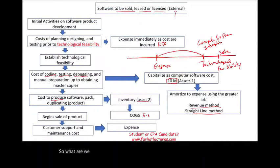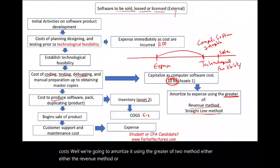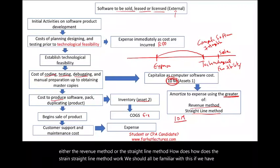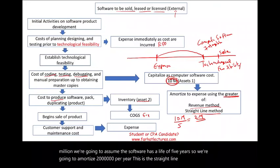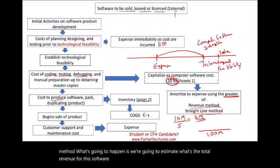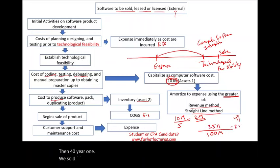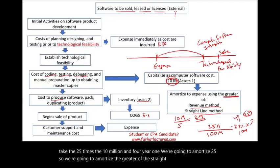What are we going to do with this $10 million that's considered software cost? We're going to amortize it using the greater of two methods — either the revenue method or the straight-line method. With the straight-line method, if we have $10 million and assume the software has a life of five years, we amortize $2 million per year. With the revenue method, we estimate total revenue for the software — let's assume $100 million. For year one, if we sold $25 million, the ratio is 25%, so we take 25% times $10 million and amortize $2.5 million for year one. We amortize the greater of the straight-line or the revenue method.